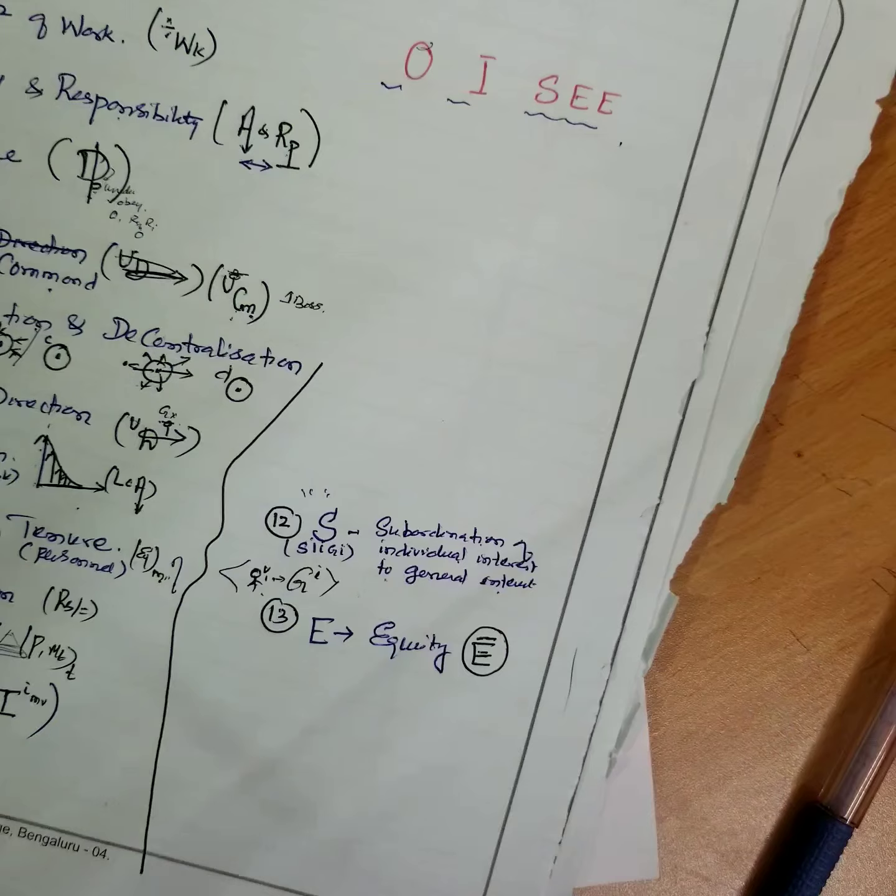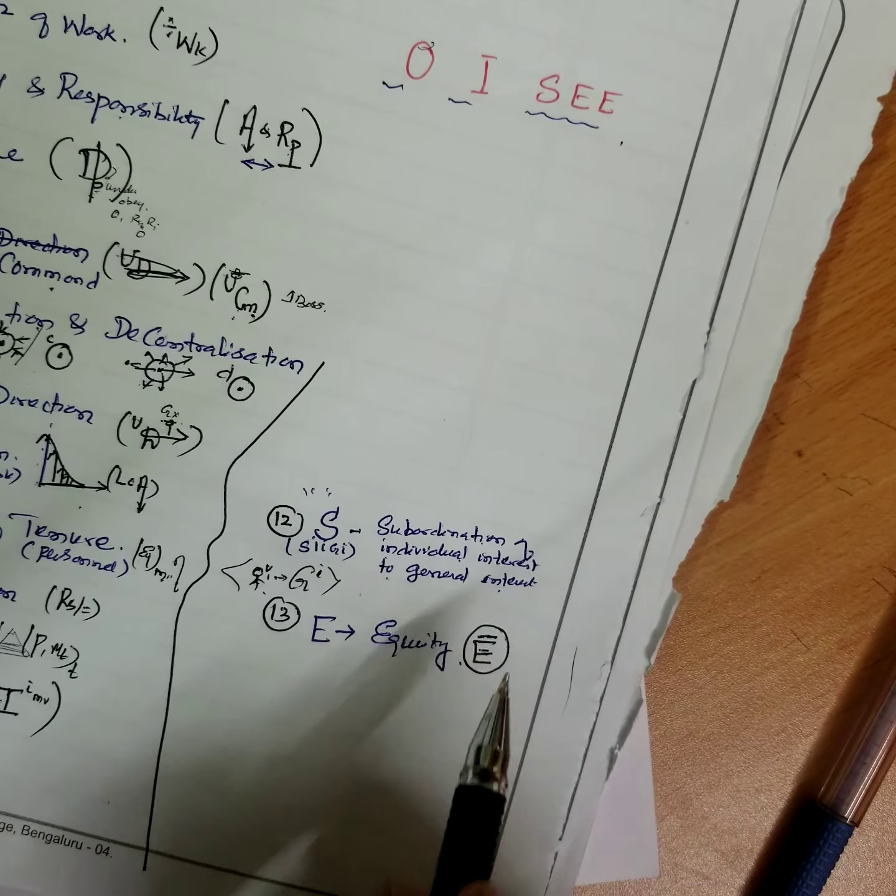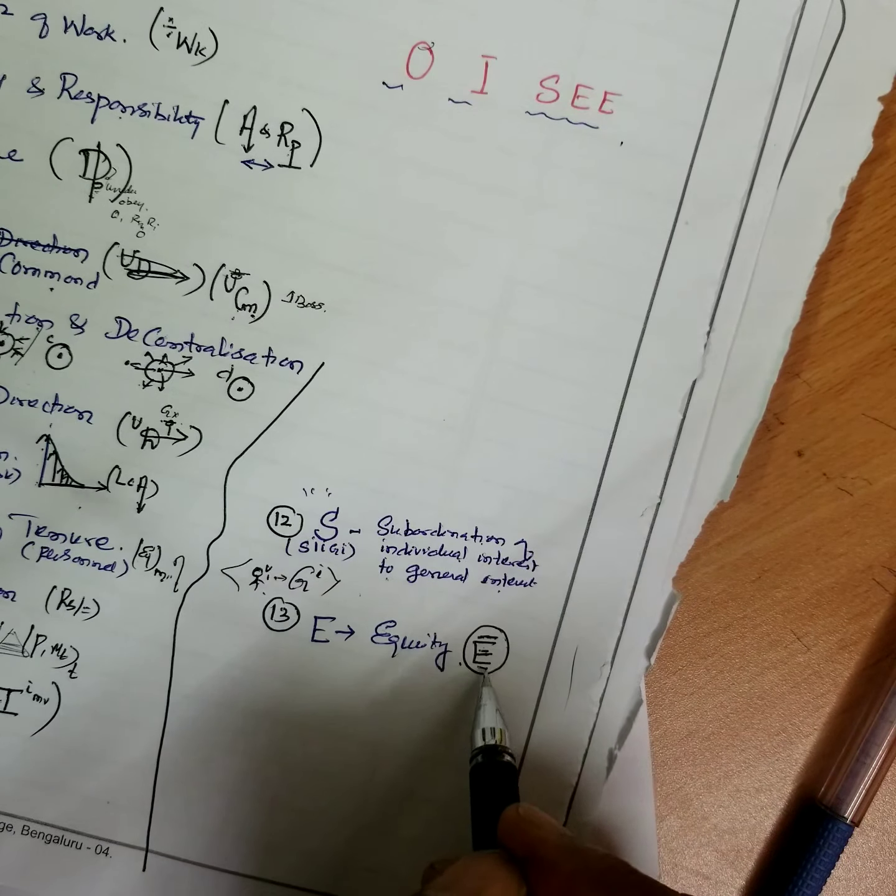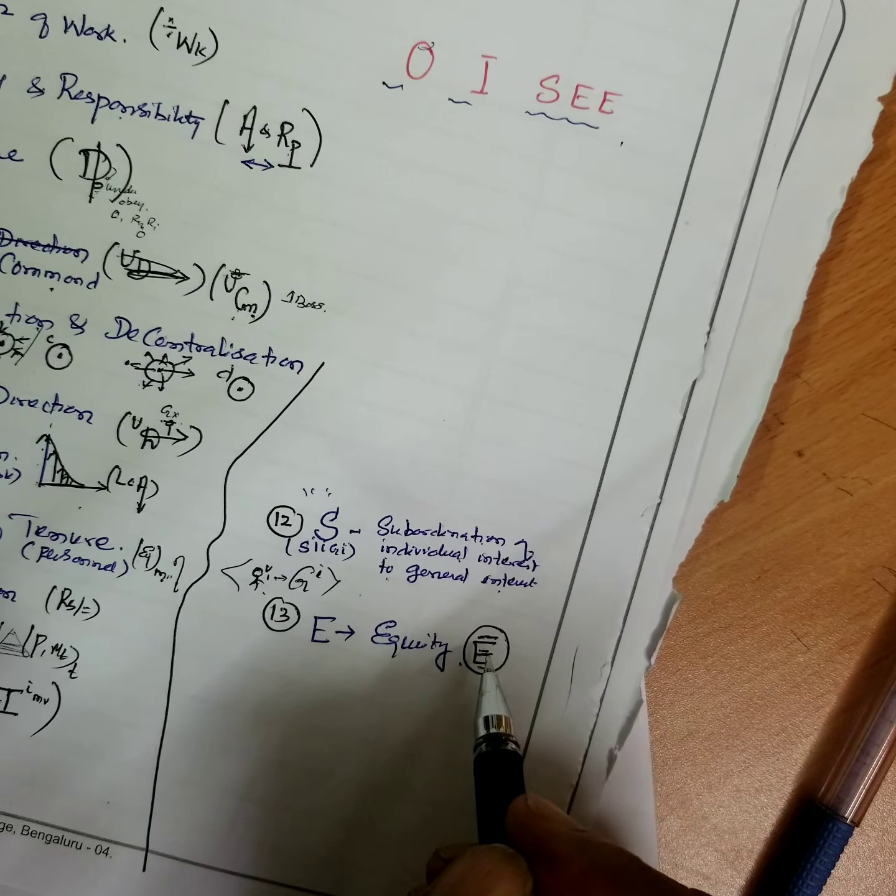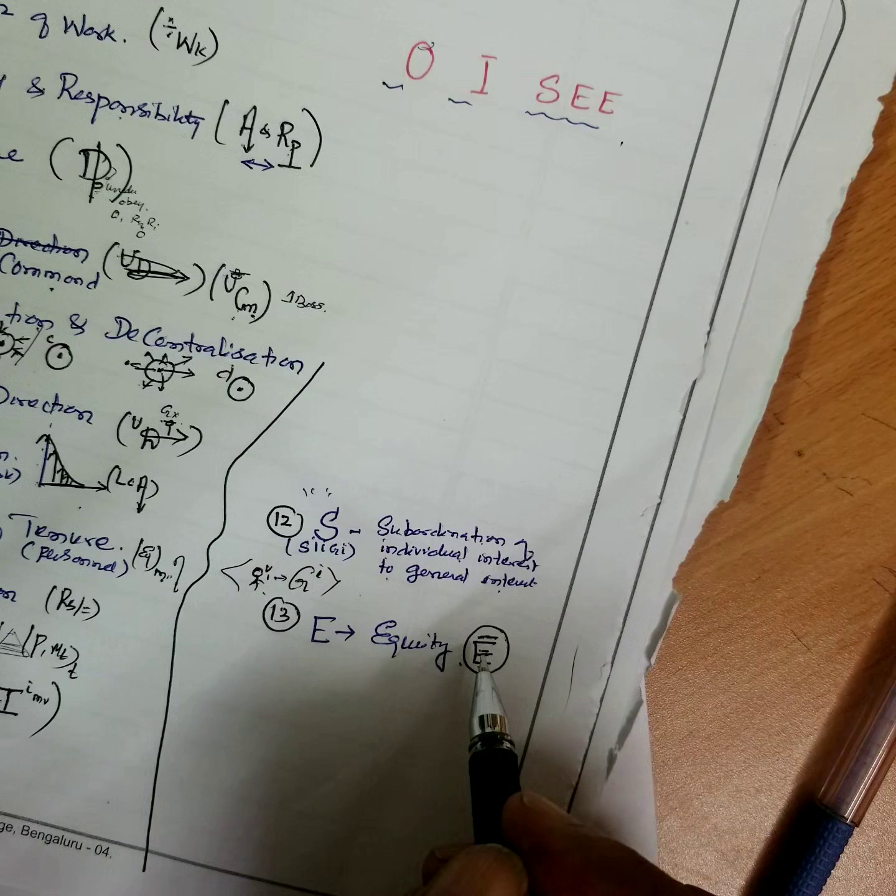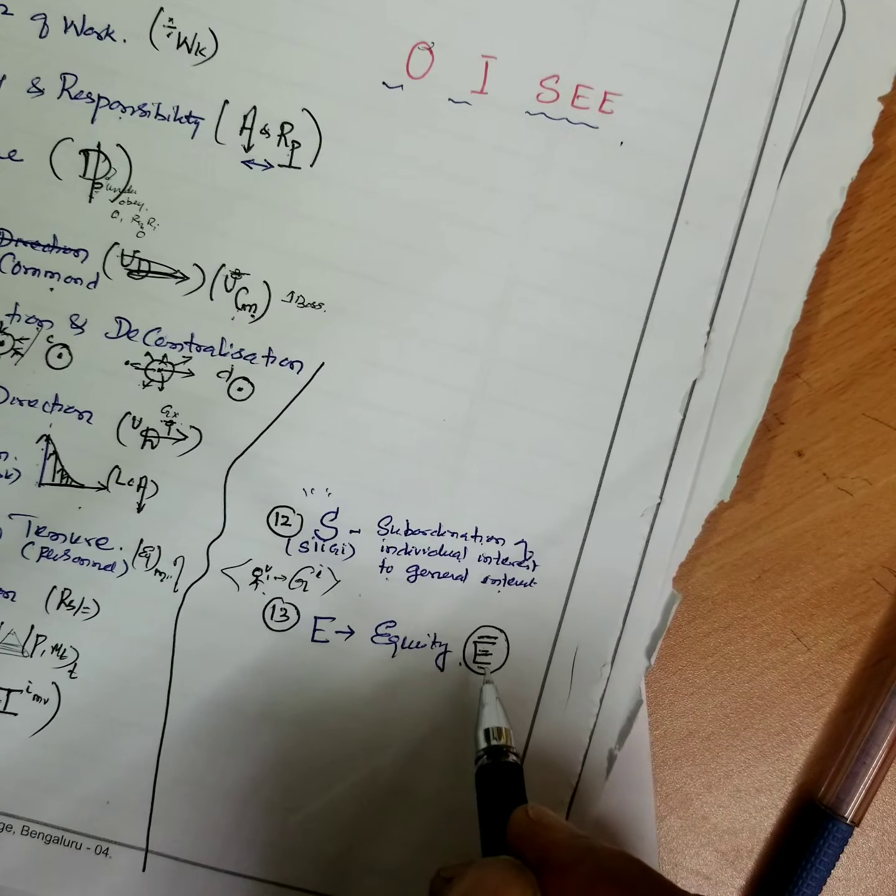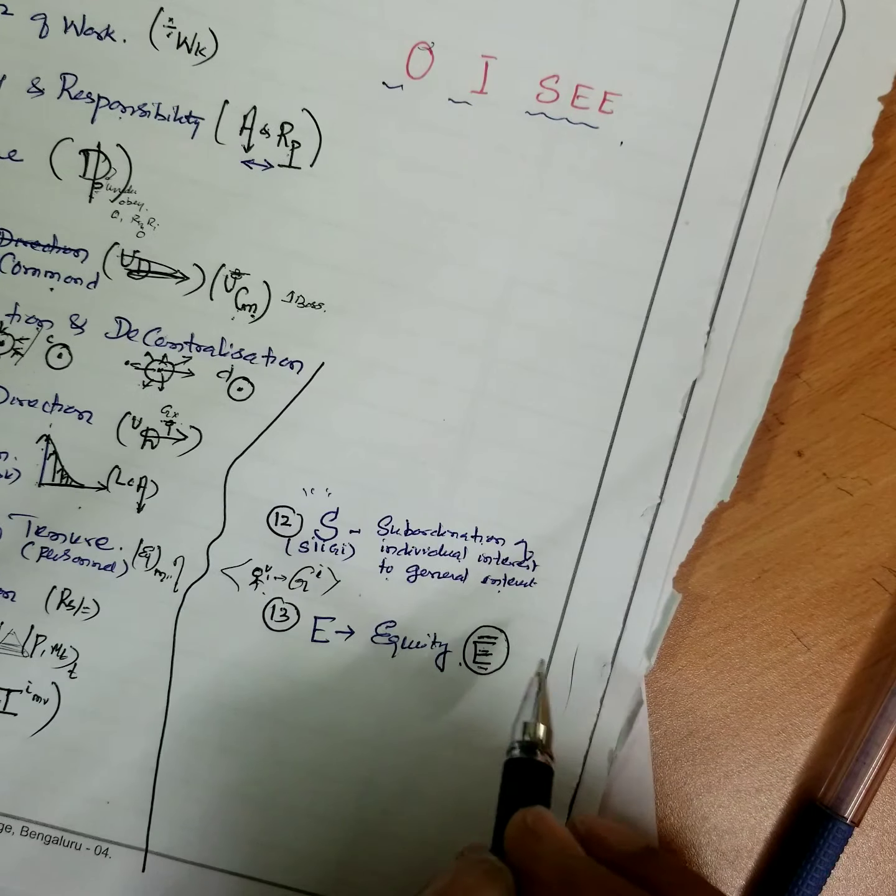What do you mean by equity? Manager and worker, subordinate and worker all should be treated equally. That is kindness and justice in the behavior of manager towards the employee or worker. That is called equity.